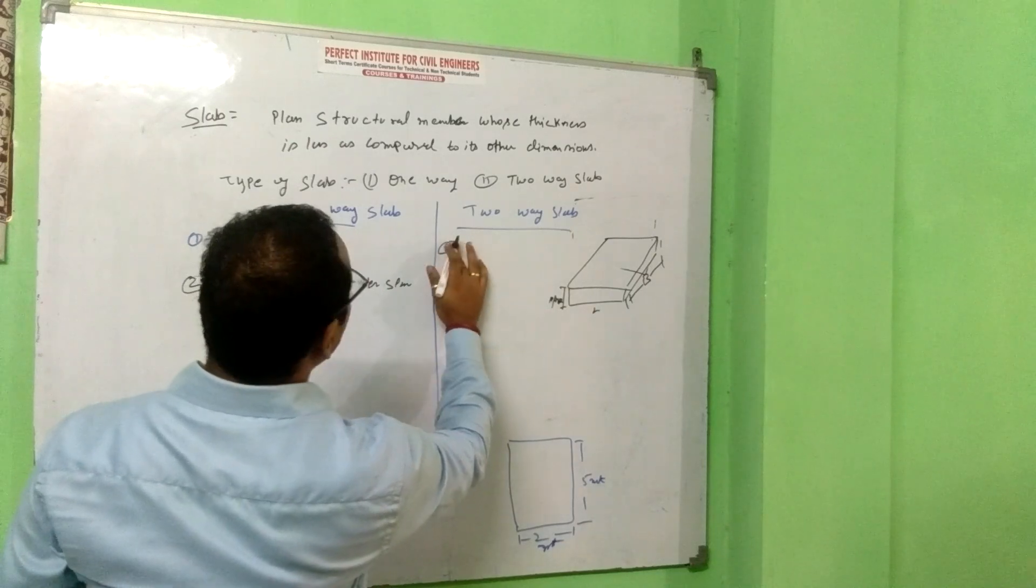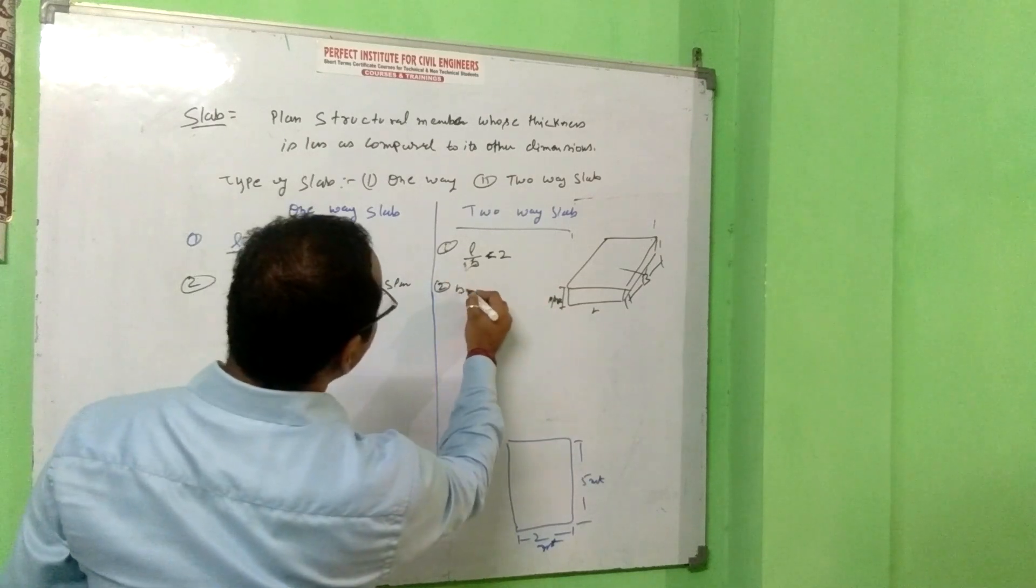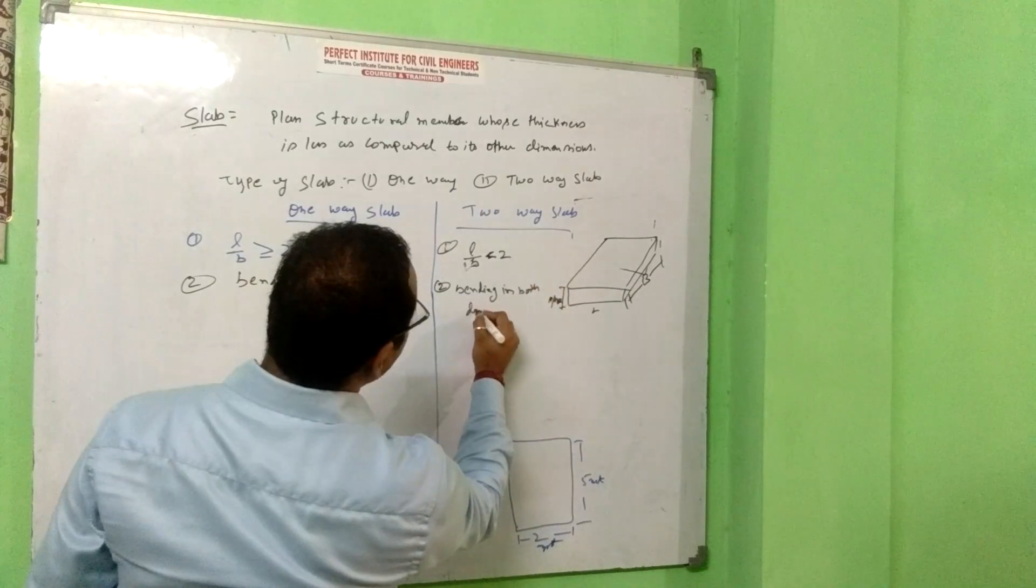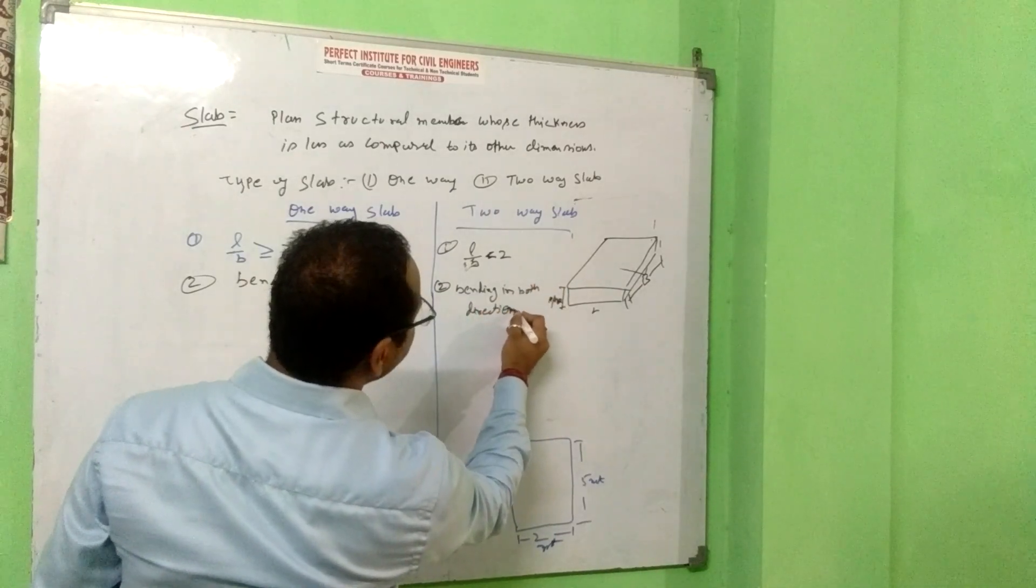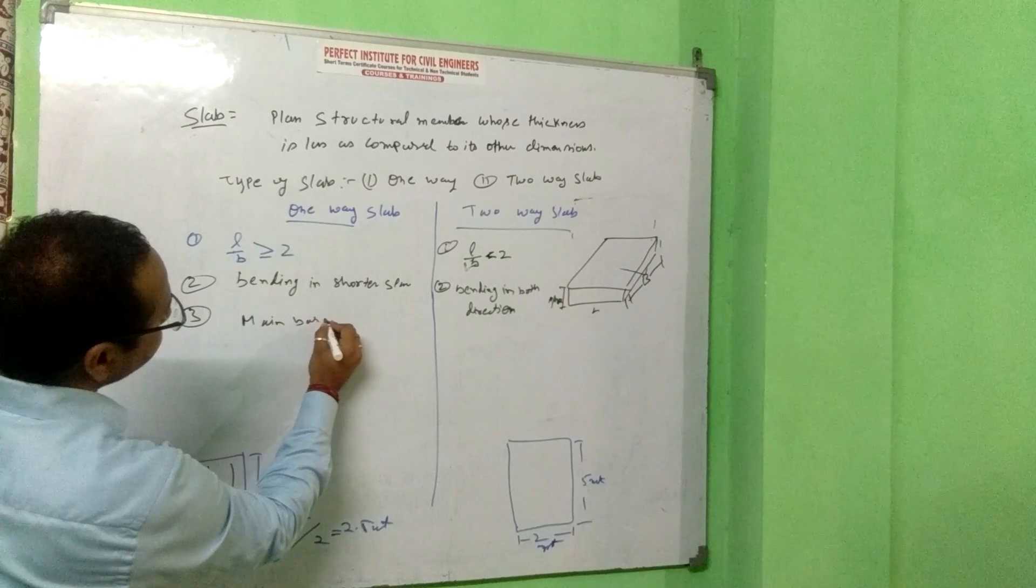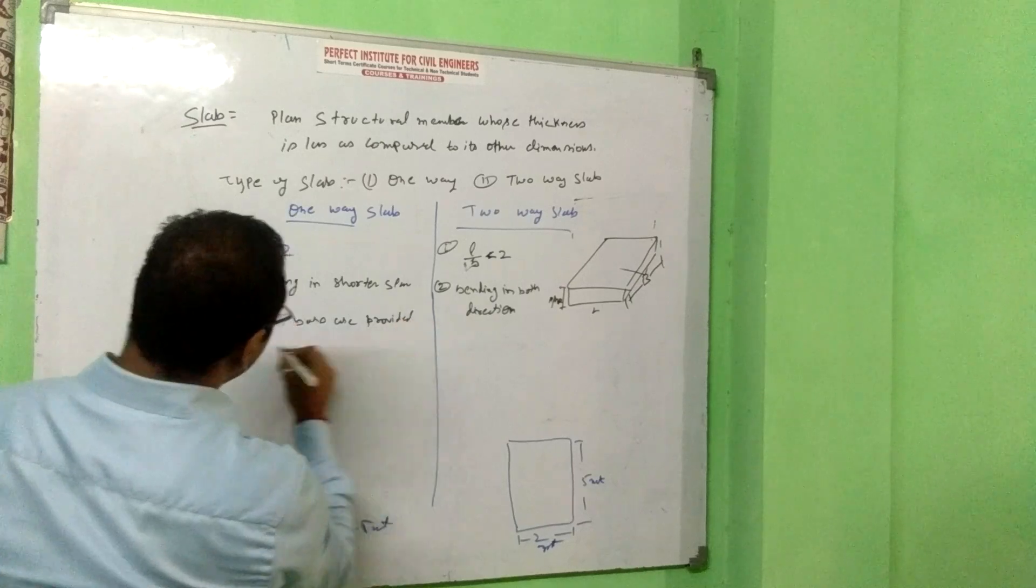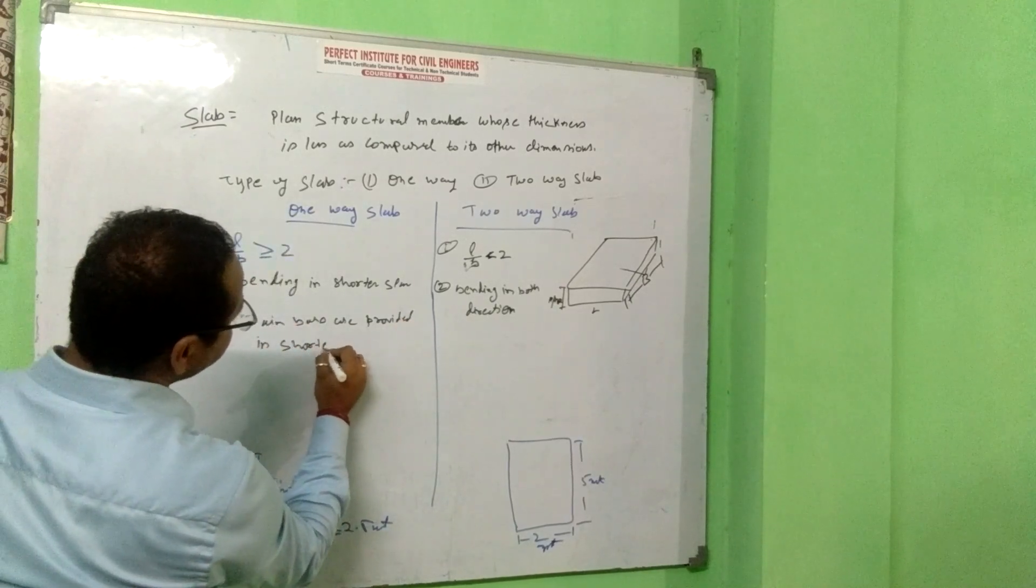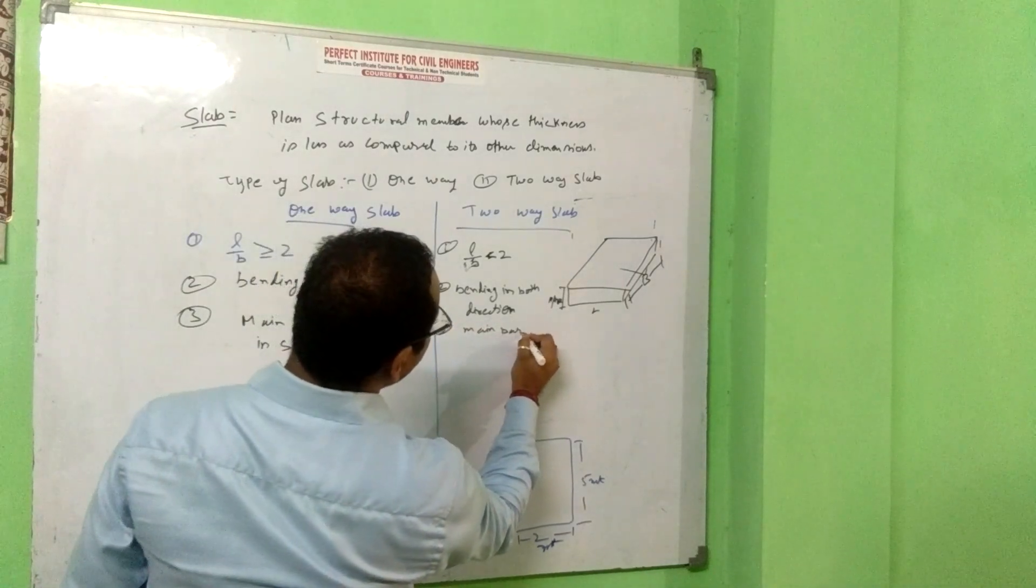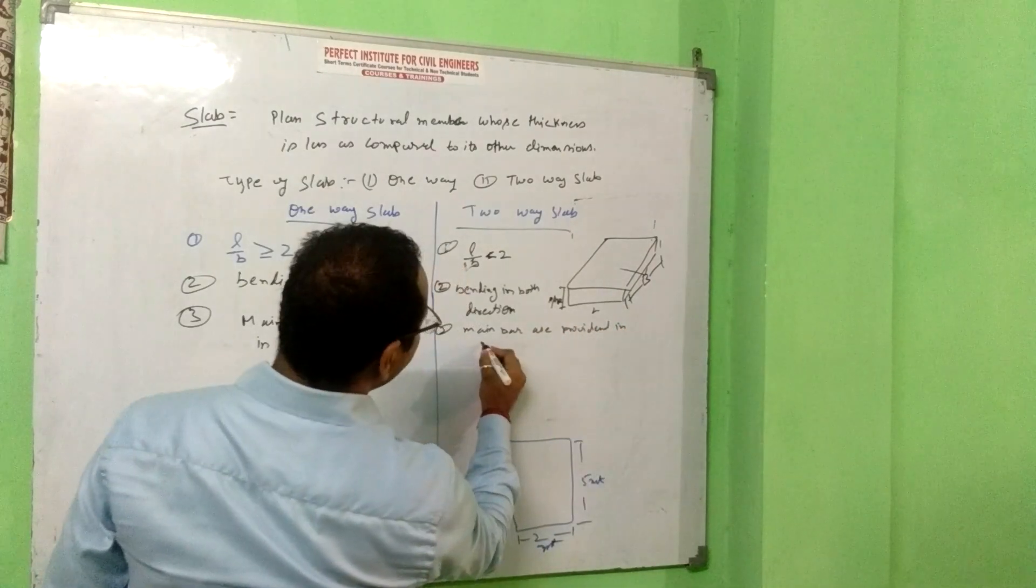Second, this is L by B is less than 2. Second, bending in both direction. Third, main bars are provided in shorter span. This main bar, shorter span. In this case, both direction, provided in both direction.